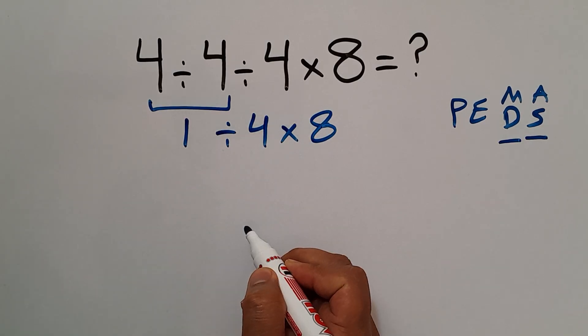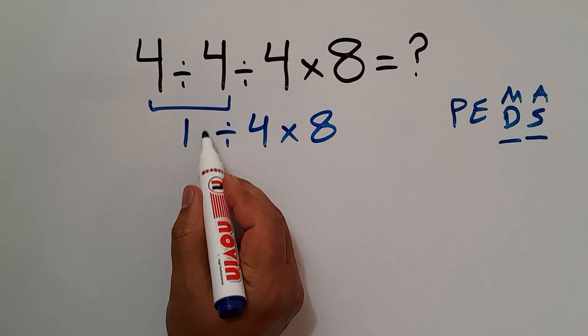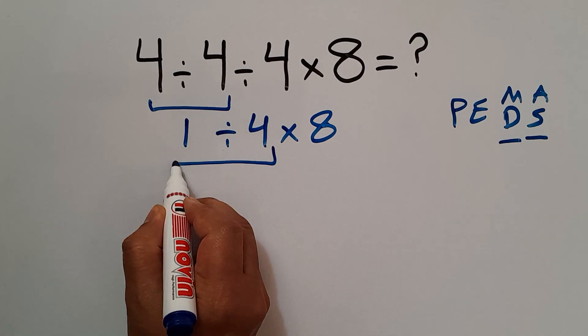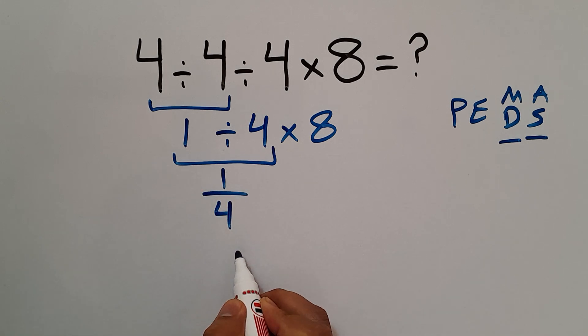Now this division: 1 divided by 4, we can write as 1 over 4. So 1 over 4 then times 8.